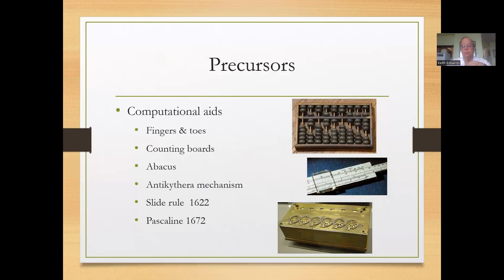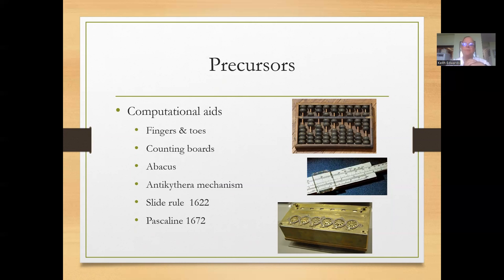We can start with the precursors, and probably the first precursors were our fingers and toes — 40 things that we share. These were used in order to count, and if you want to look it up, the Babylonians actually had a very cool way of counting all the way up to 60 using their fingers, toes, and knuckles. From there, we probably progressed to counting boards, putting stones onto boards or rocks in order to count how many different items we had.